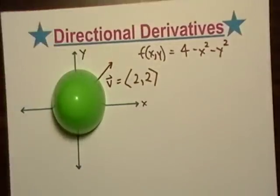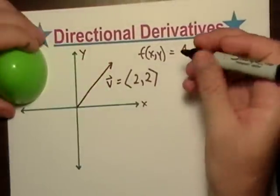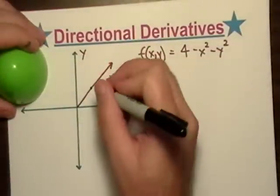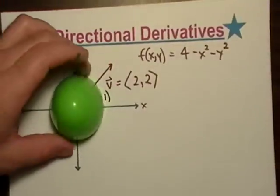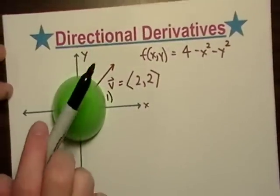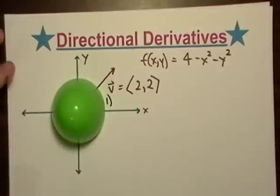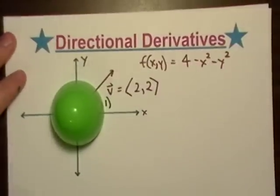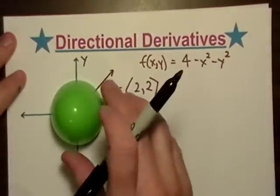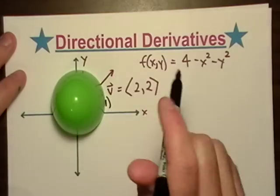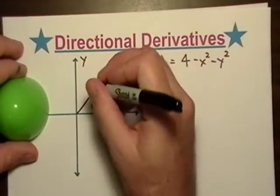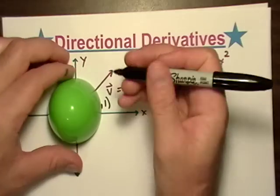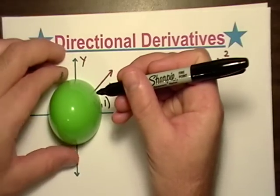If we're going to take a derivative, we're going to take it at a point — so let's just call it (1, 1), to keep it easy. We're going to look at the derivative and look at what's going on at the point (1, 1). Just by looking at it, the point (1, 1) is probably somewhere right there.